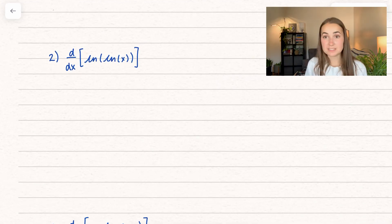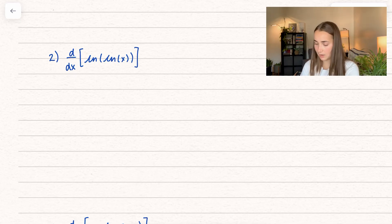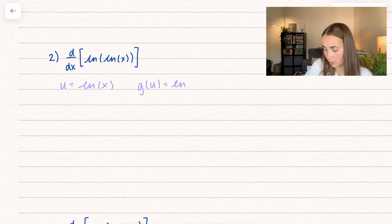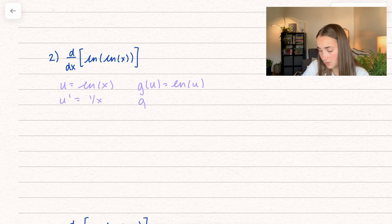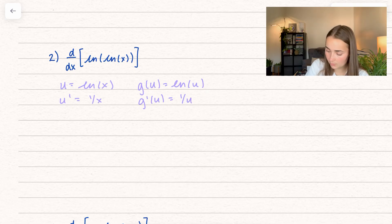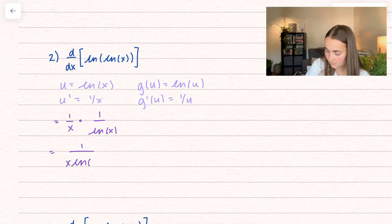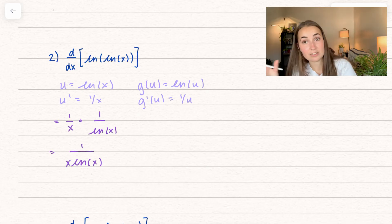What happens if we have the composition of natural logs? I'll set this up again with chain rule: u is equal to the inside, which is natural log of x, and g of u is also equal to the natural log of u. So u prime is equal to 1 over x, and g prime of u is 1 over u because we changed our variable. Plugging this in, the derivative equals 1 over x times 1 over u, which is 1 over the natural log of x. Combining these, I just get 1 over x natural log of x. The composition wasn't that scary — when you separate it all out, it works out pretty nicely.